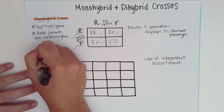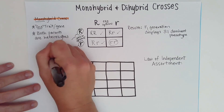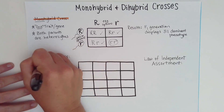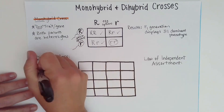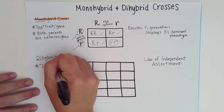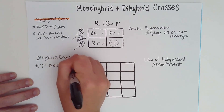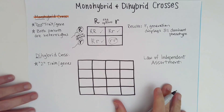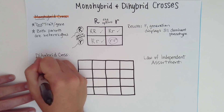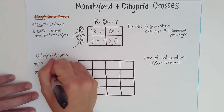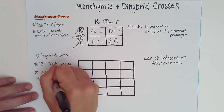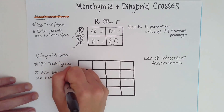Now let's compare that with a dihybrid cross. The prefix 'di' means we're going to be looking at two traits or genes. Again, in Mendelian genetics, one gene is associated with one trait, and both parents are heterozygous for both traits.